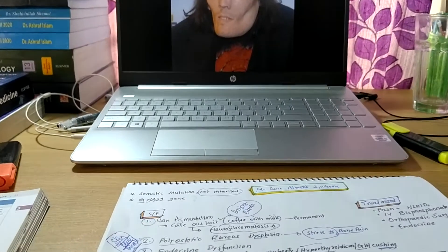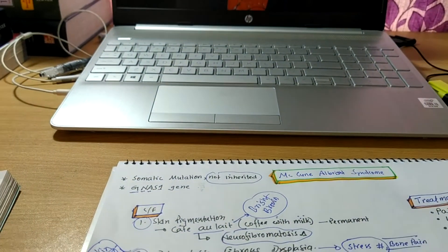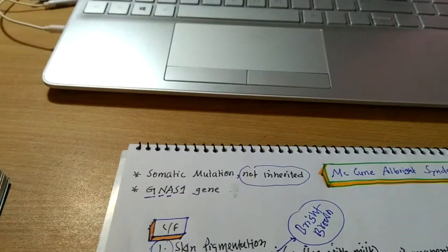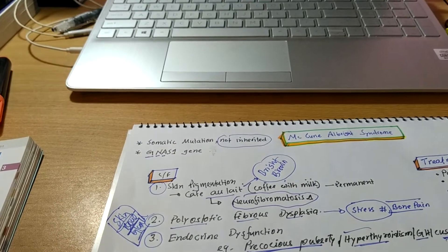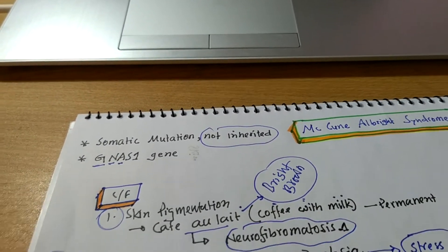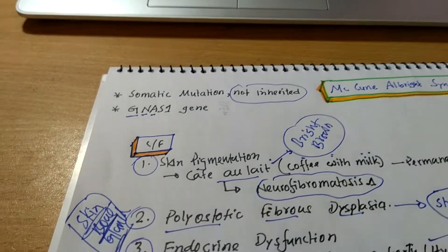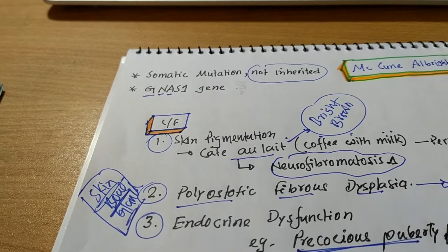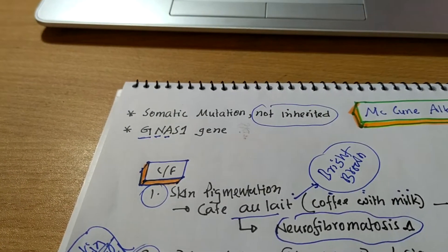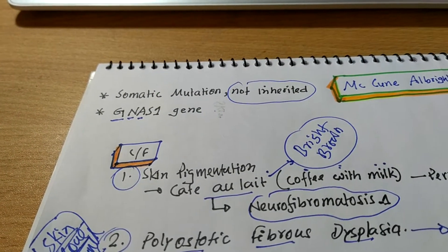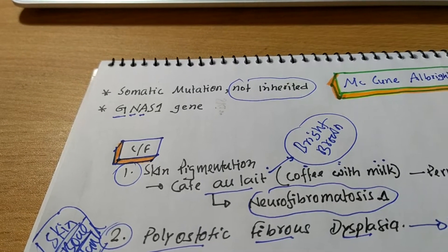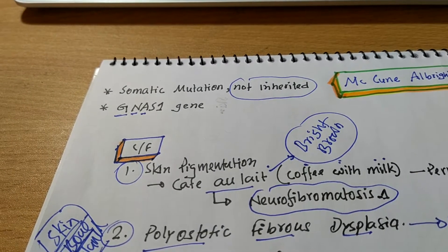The McCune-Albright syndrome is a genetic disorder due to somatic mutation and it is not inherited. As you know, somatic mutations are not inherited but instead occur during post-zygotic mitotic cell division.